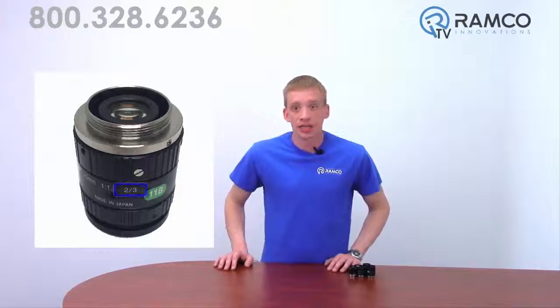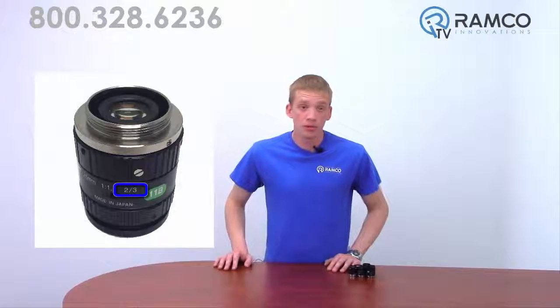You will see something like this on the lens: one third, two third, one inch, and so on. This refers to the aperture size of your camera. The aperture size will correlate to the resolution of your camera. The lens must be at least the same size, if not larger, than the aperture of your camera. Refer to your manufacturer's spec sheet to get the specific size of your camera's aperture.